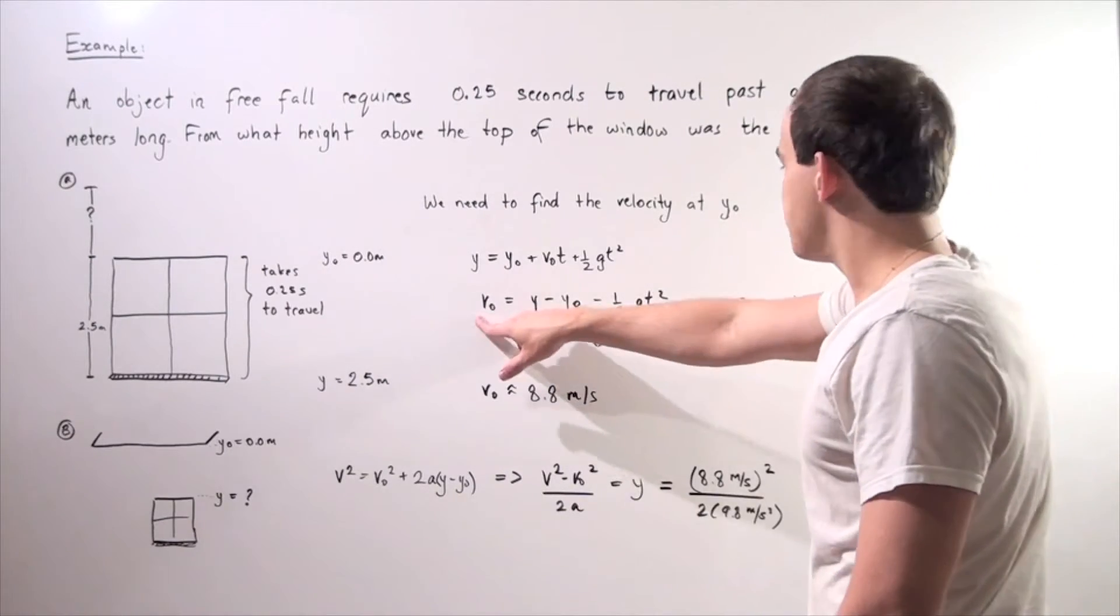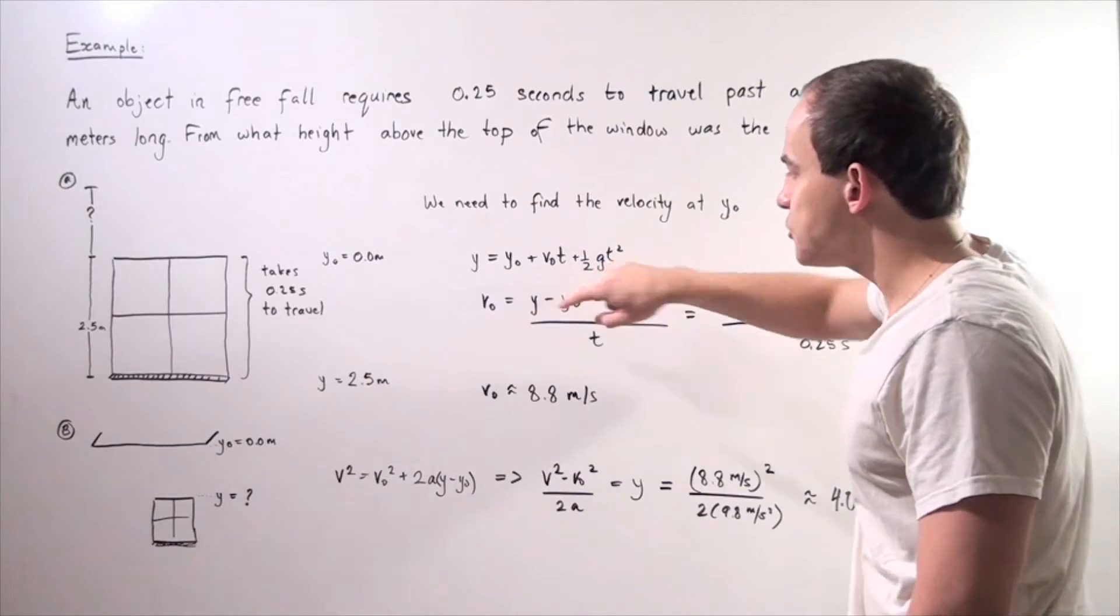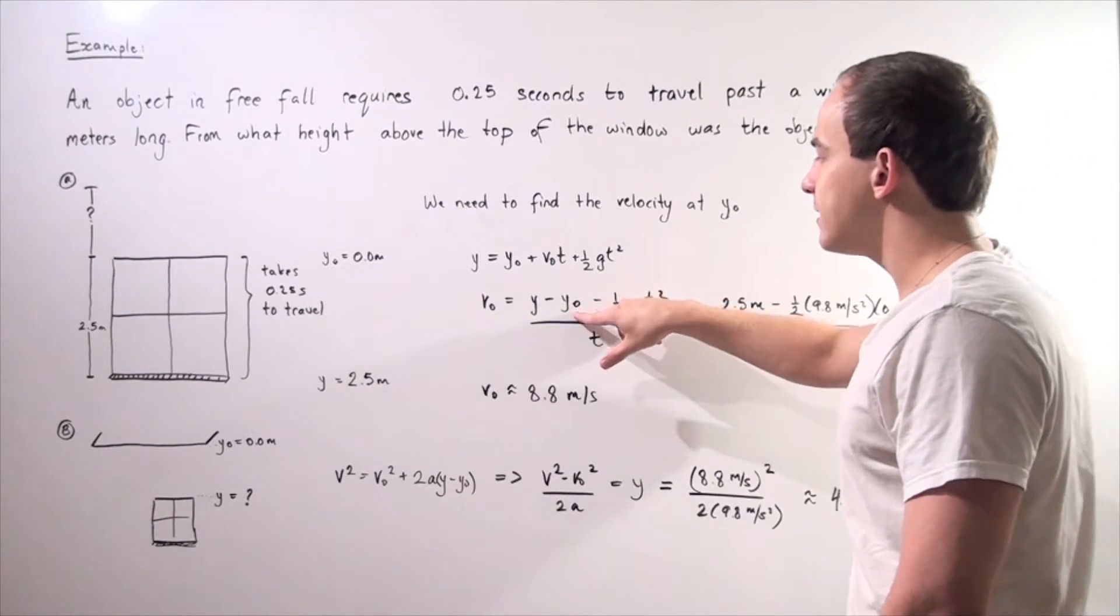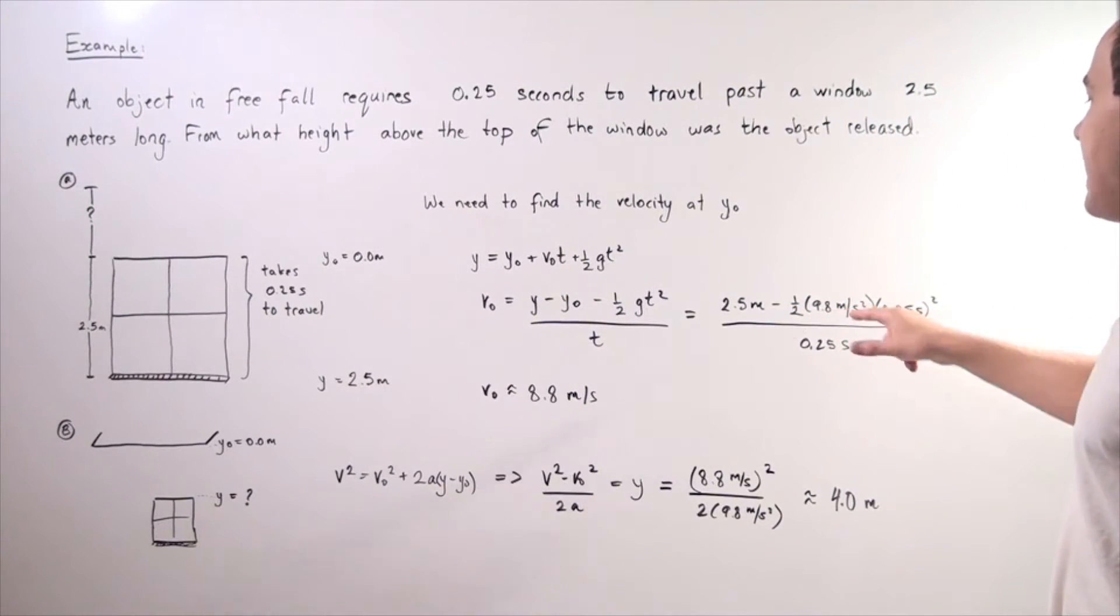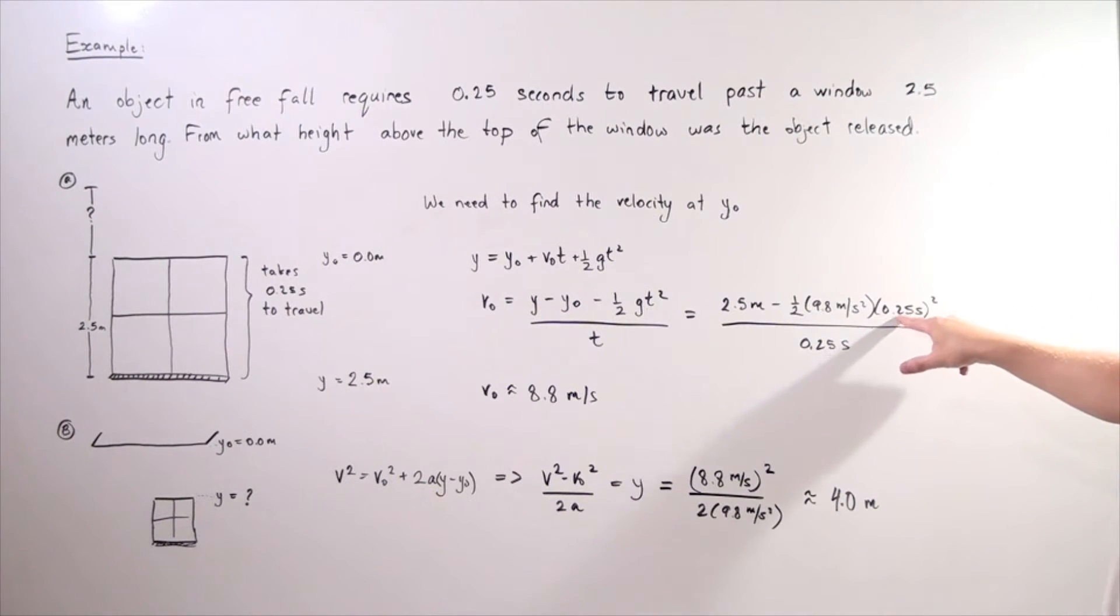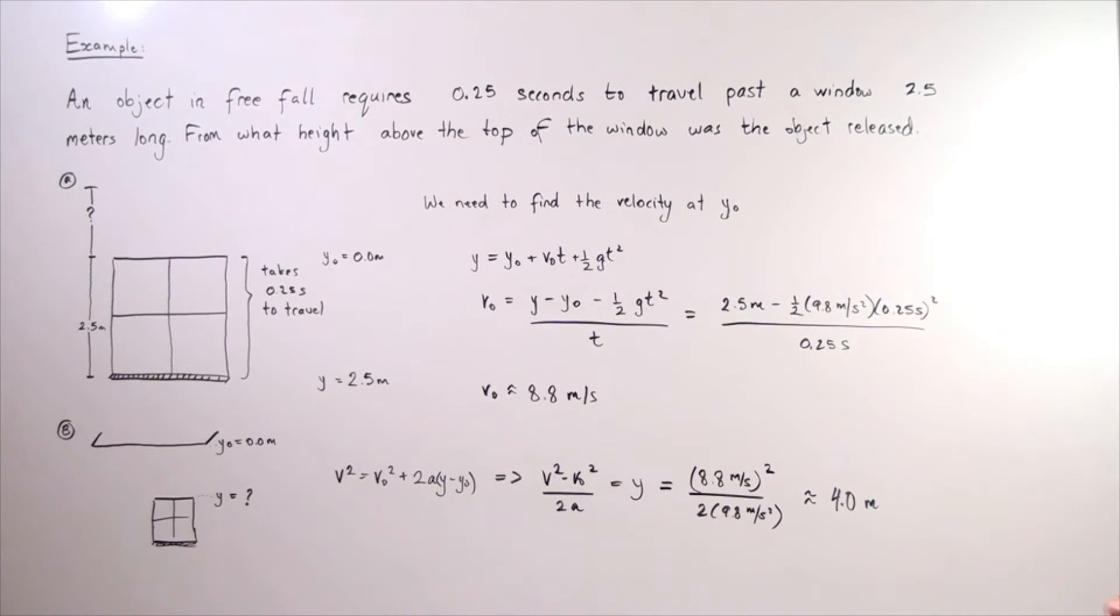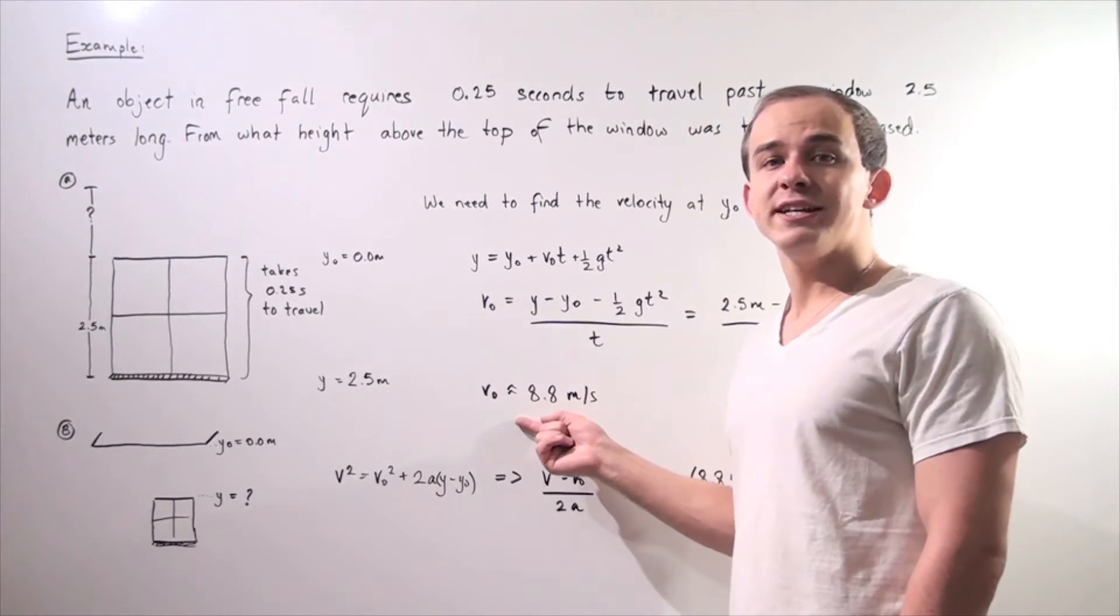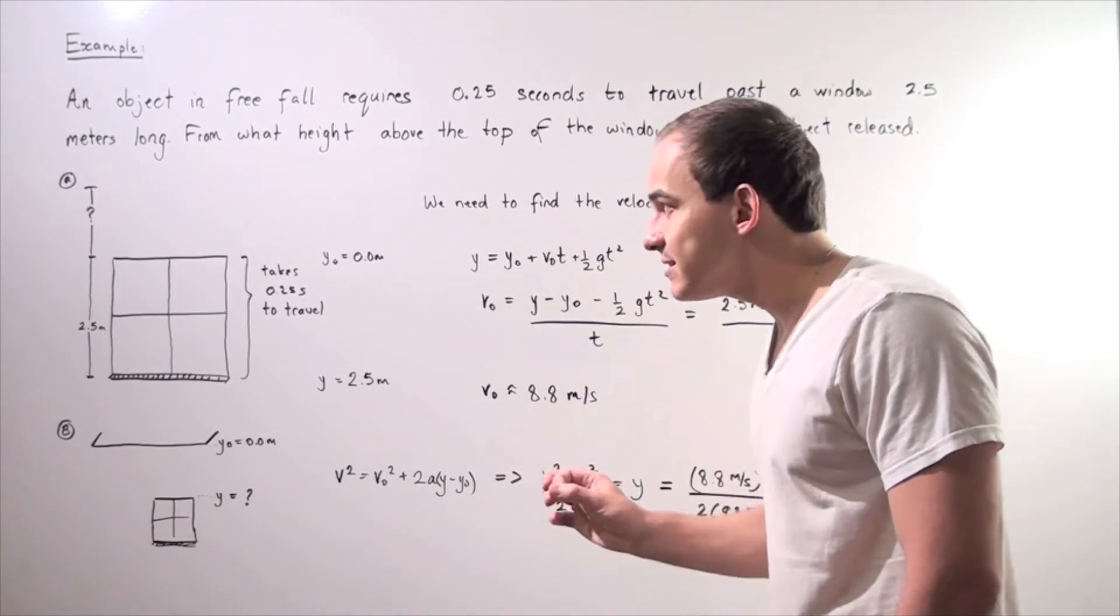Now let's plug in all our knowns. Our initial height is y, 2.5 meters, final height is zero, so that crosses out. One half times positive 9.8 meters per second squared multiplied by our time, 0.25 seconds squared. Divide that whole thing by 0.25 seconds and we get approximately 8.8 meters per second.